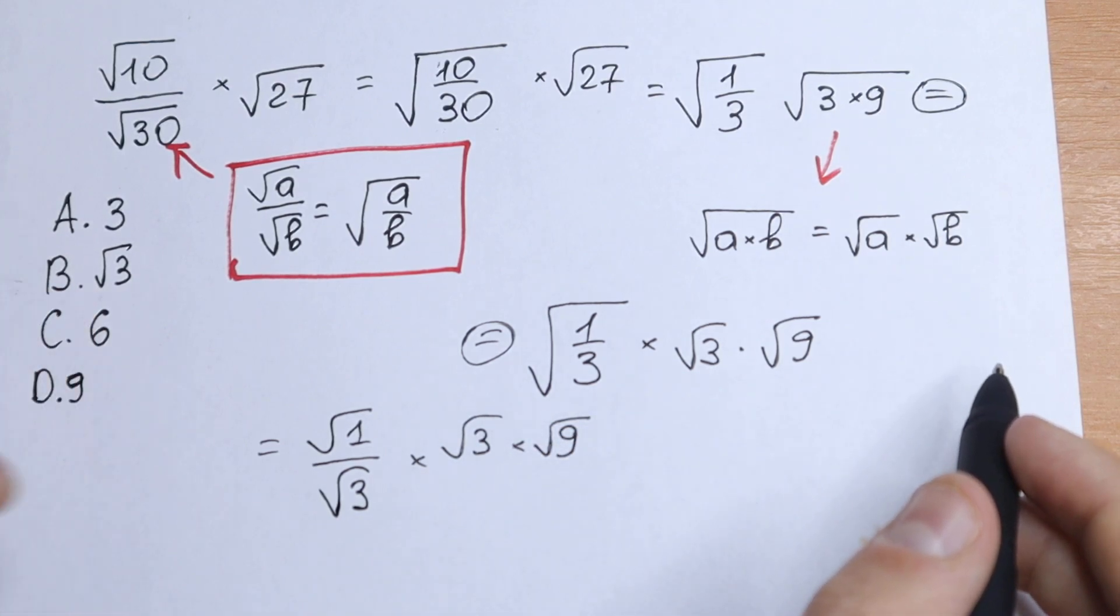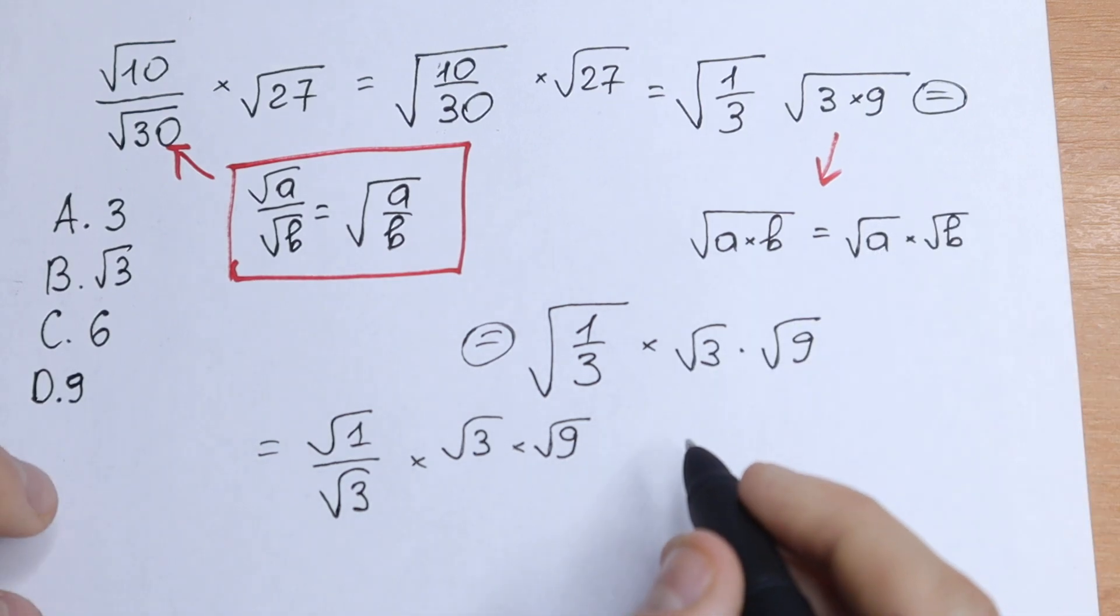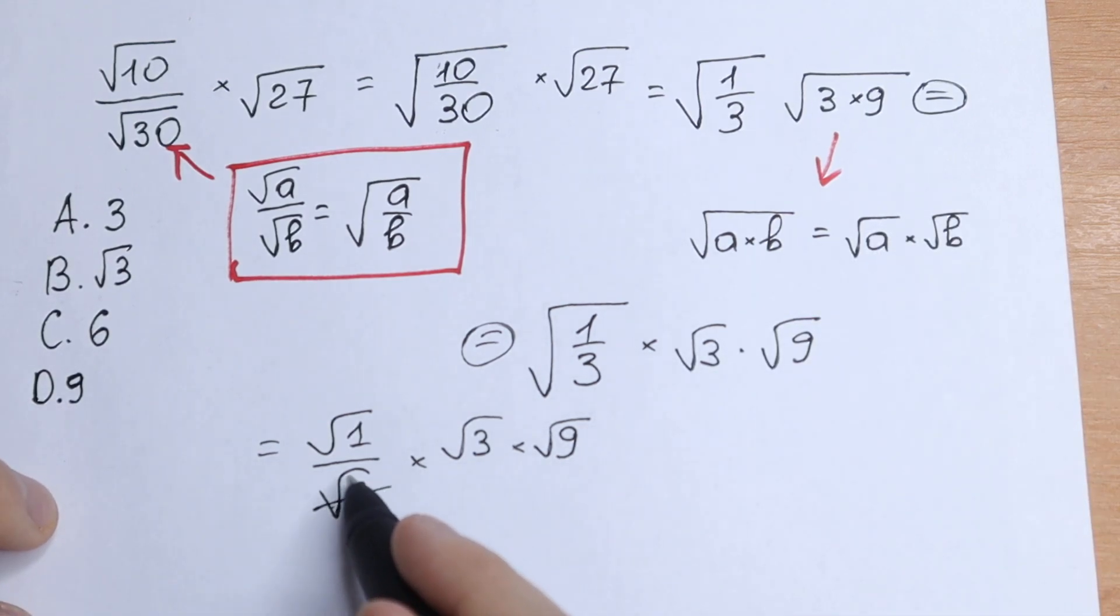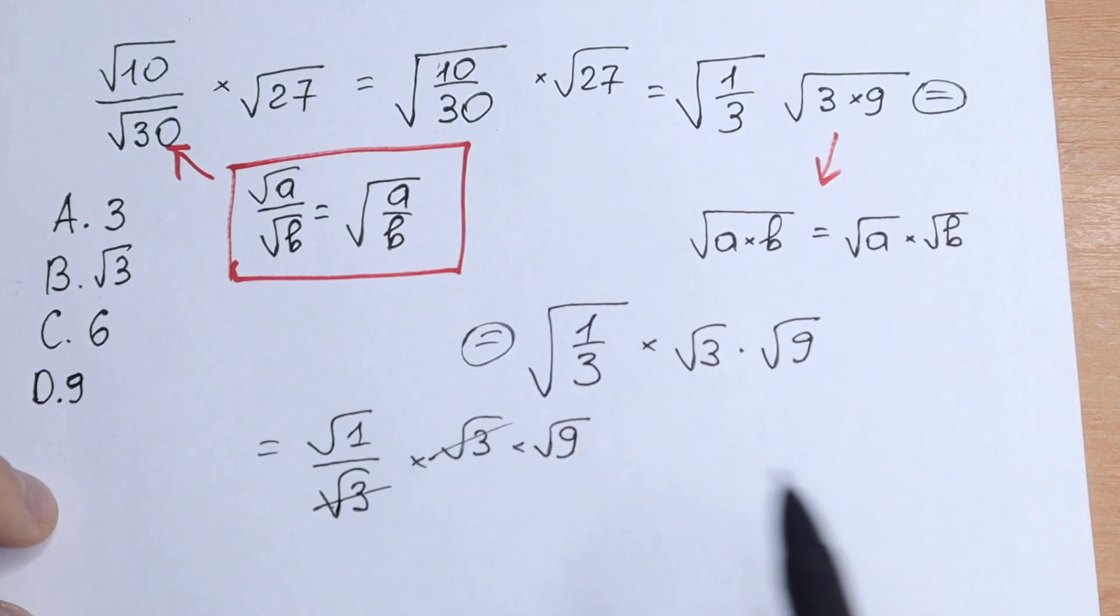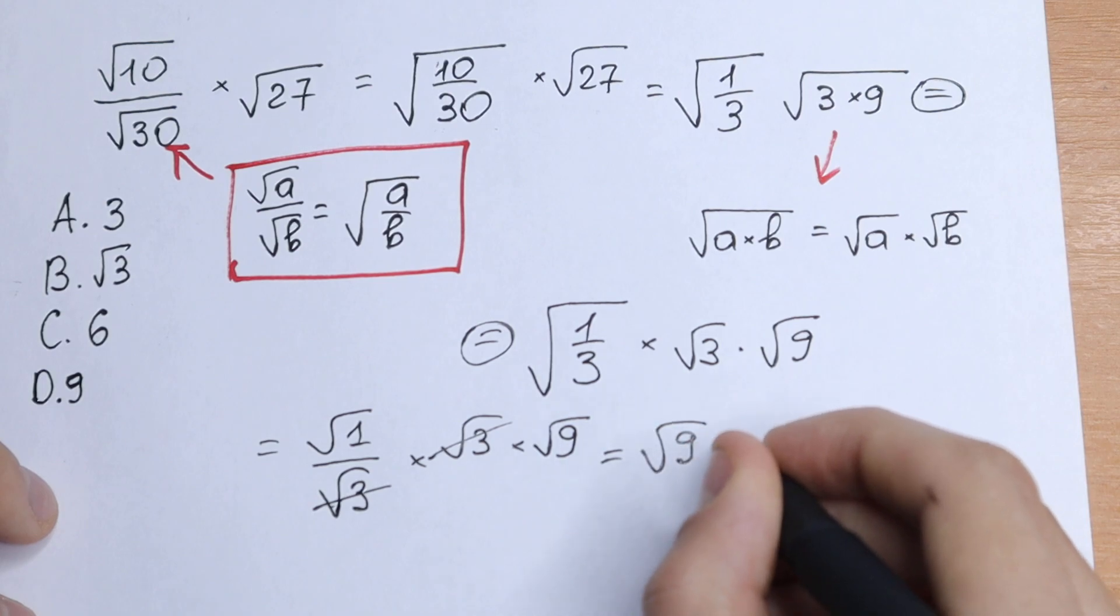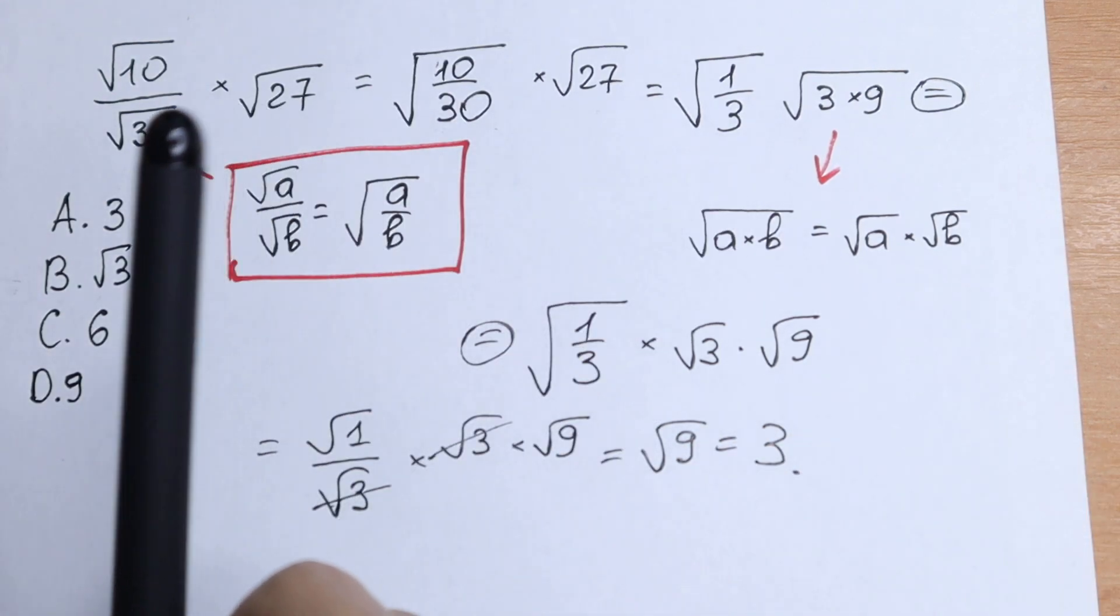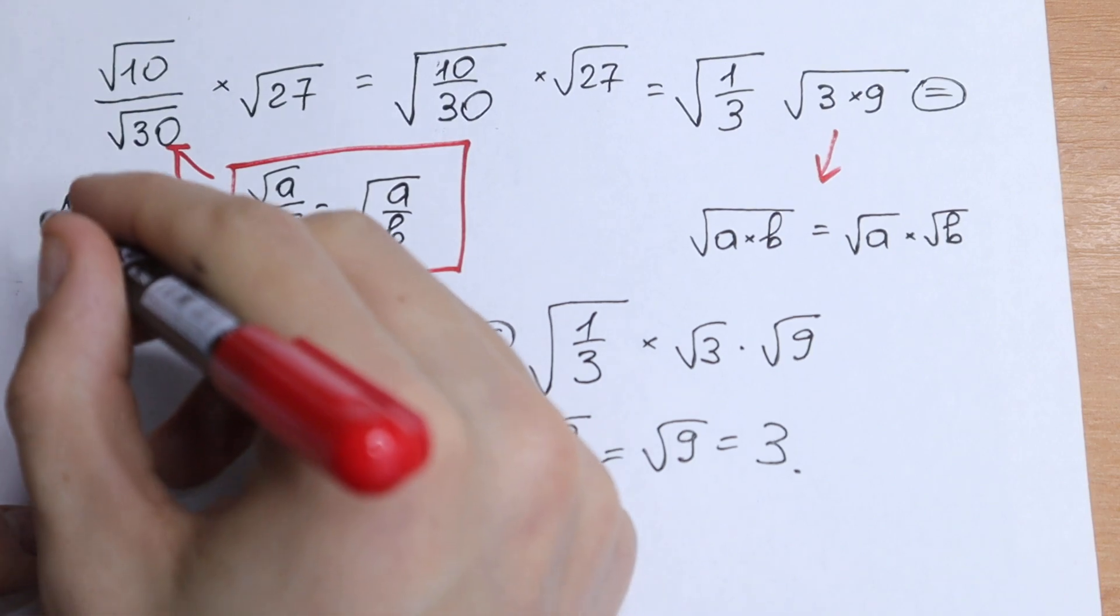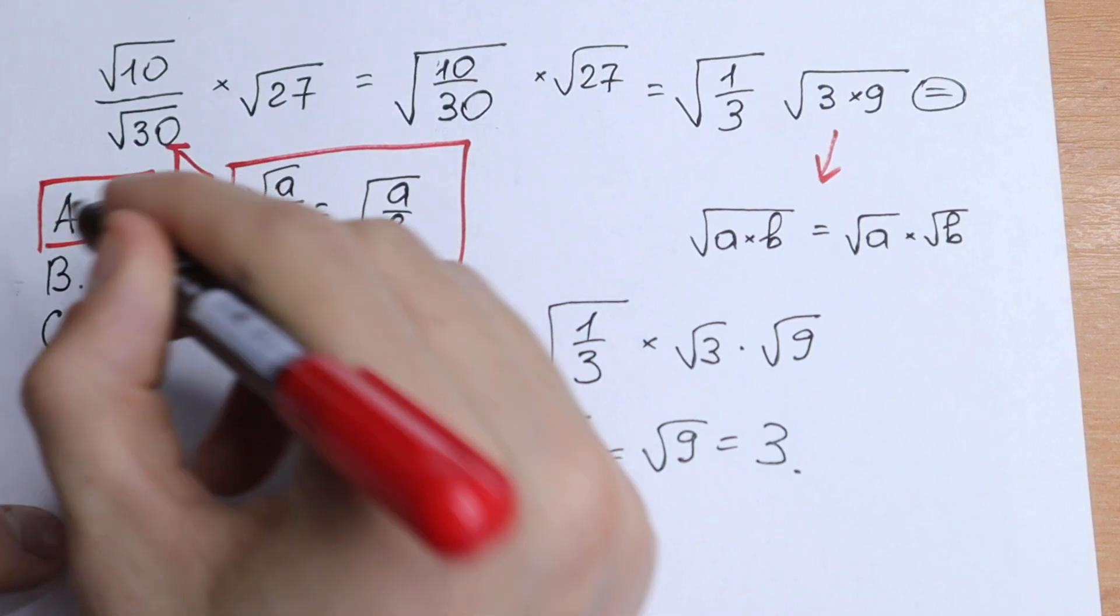And take a look at what we have. We can easily cancel because this is in our denominator and this is our numerator. The square root of 1 is 1, so as a result we'll have square root of 9, which equals 3. So we find our answer: option A.